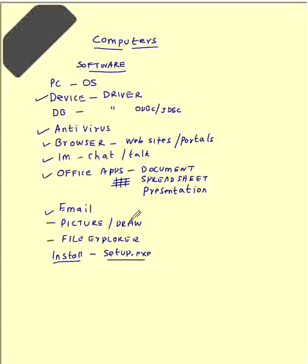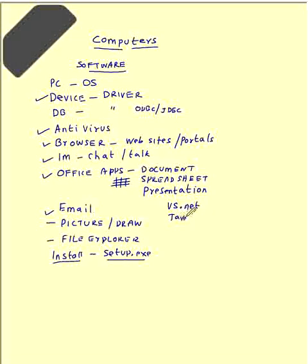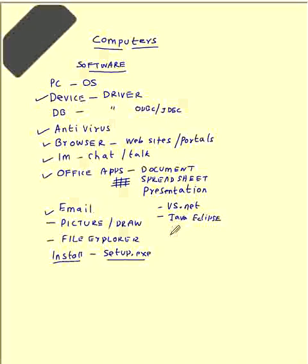There are additional software in every system depending upon the usage and also on the users. For example, there are applications like programming tools — Visual Studio .NET and Java Eclipse. These are special software used only by programming people, so they will not come pre-installed and you may have to install them. If you are an end user, some ERP software you may have to install and then start using.